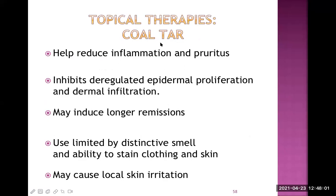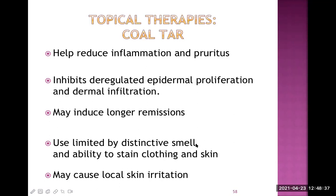One of the most important topical therapies is coal tar. Coal tar helps reduce inflammation and pruritus — it is an anti-inflammatory substance. It inhibits the dysregulated epidermal proliferation and dermal infiltration by T-cells, and it may induce longer remission. It is commonly used in the treatment of psoriasis. However, there are drawbacks: its distinctive smell is unpleasant, it can stain clothing and skin, and it can leave skin irritation — these are undesirable to patients.